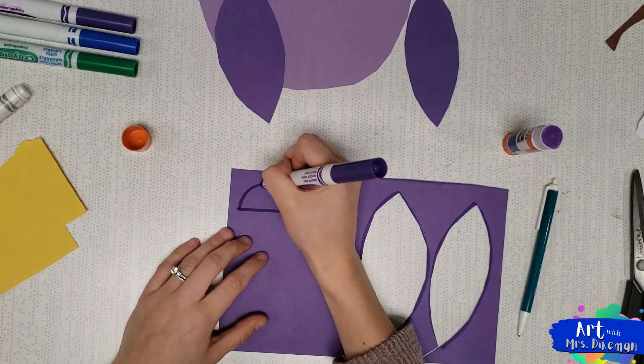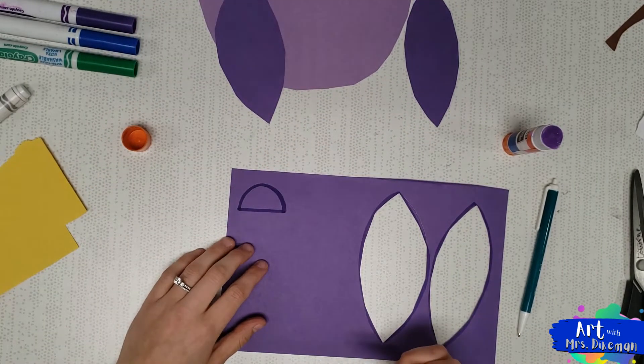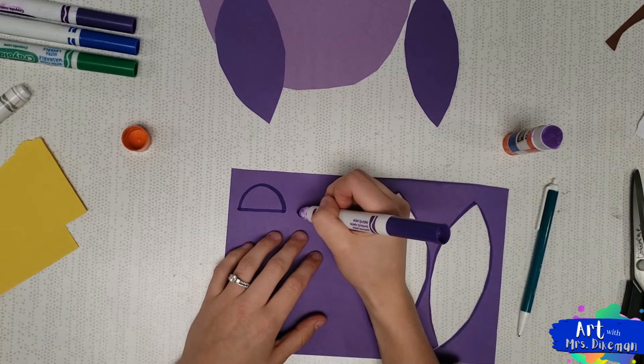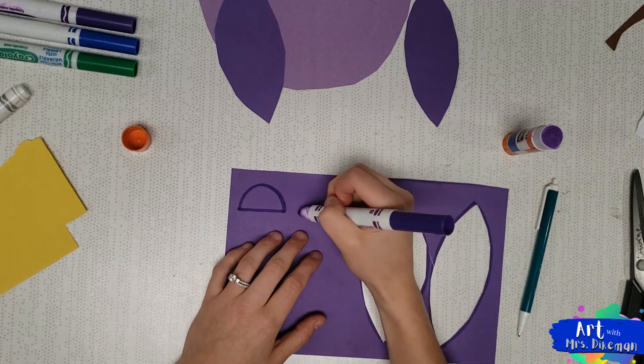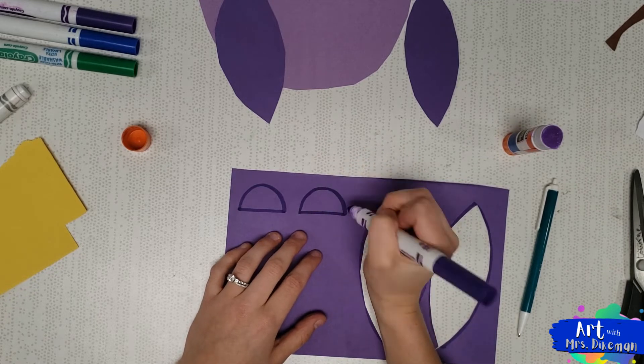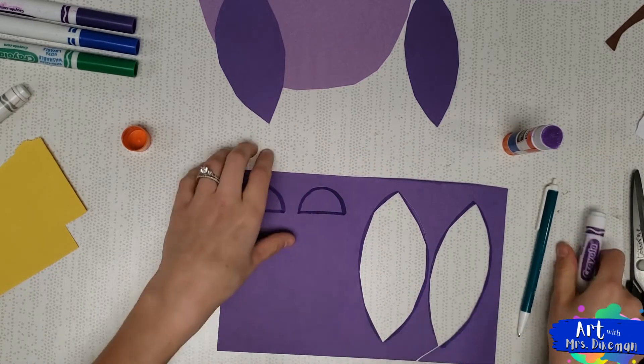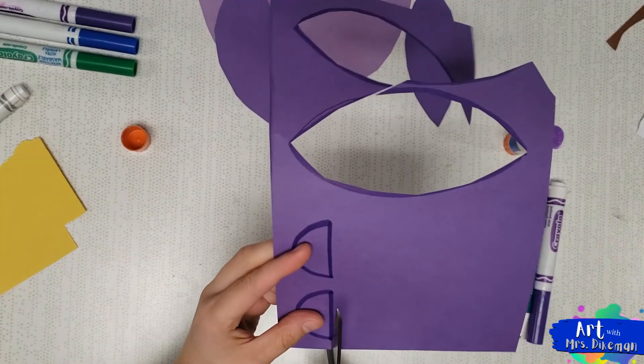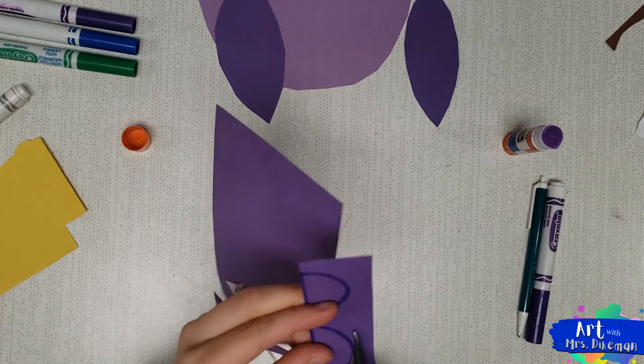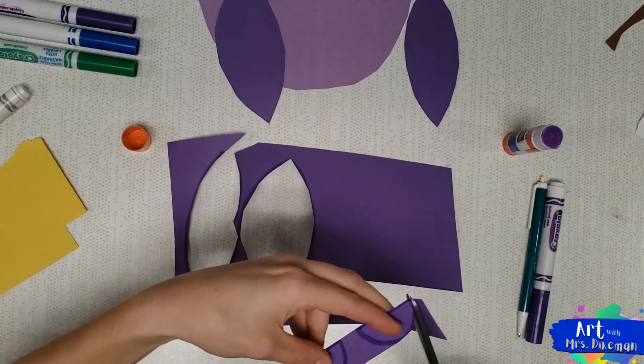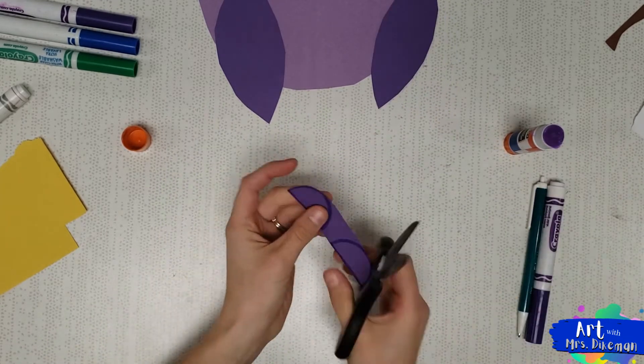Then we're going to do a big curve up and connecting. Same thing for another eye, draw the width, so a line, and then curve up and connect.